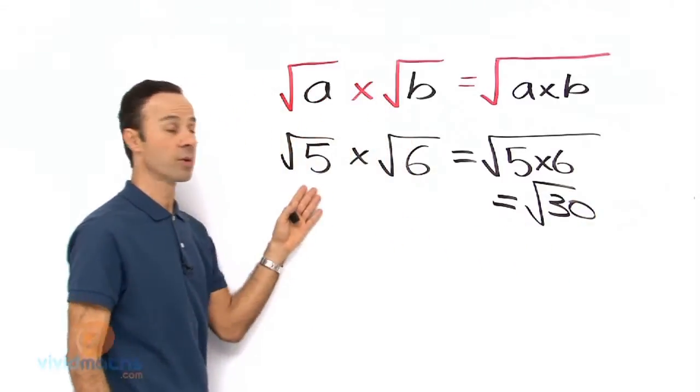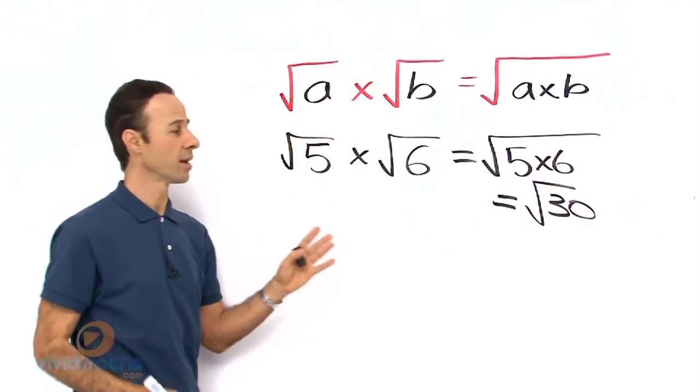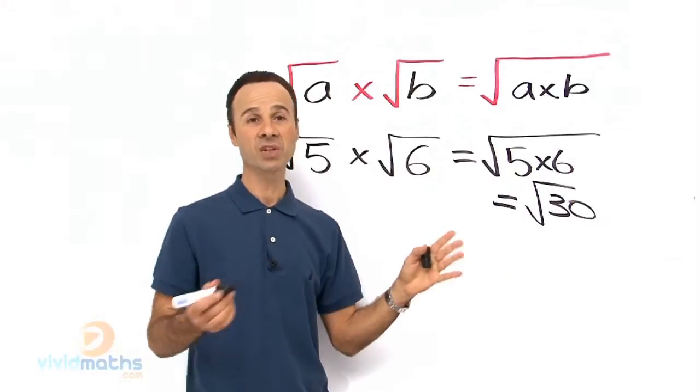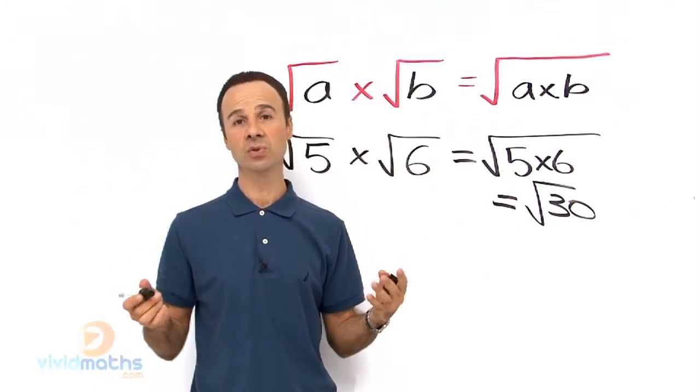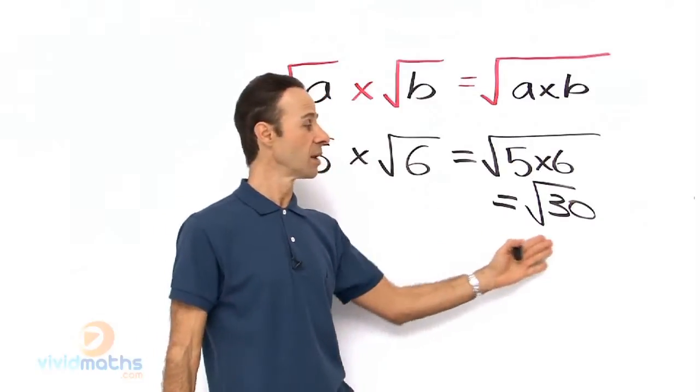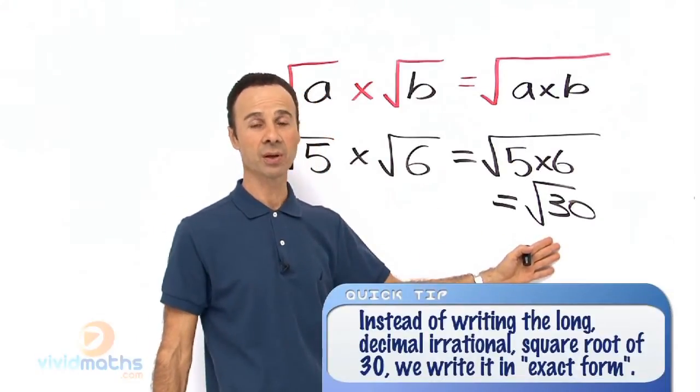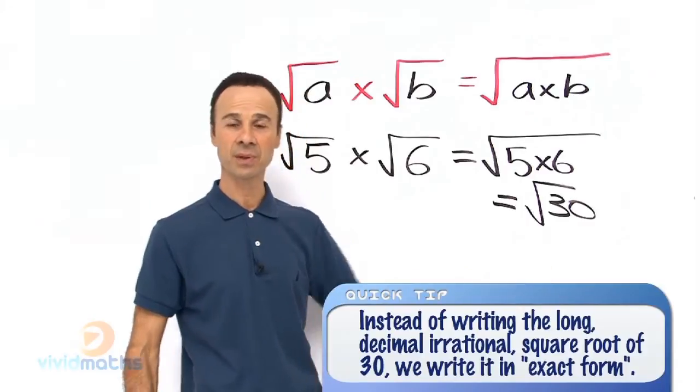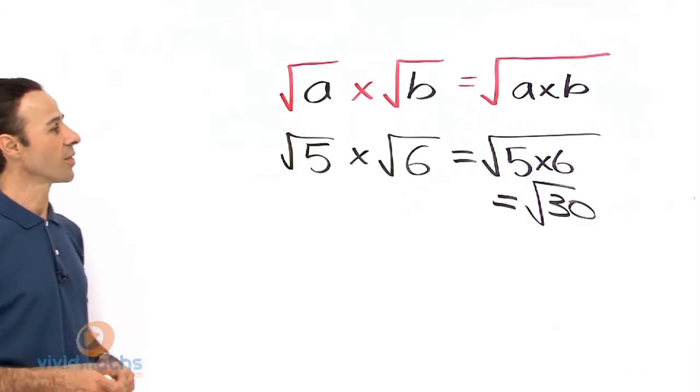So that is how we do the multiplication of surds. Now the square root of 30 is an irrational number, that is like 5.477225575. Instead of writing all those decimals, let's just keep it as square root of 30. It is nicer and neater and tidier.